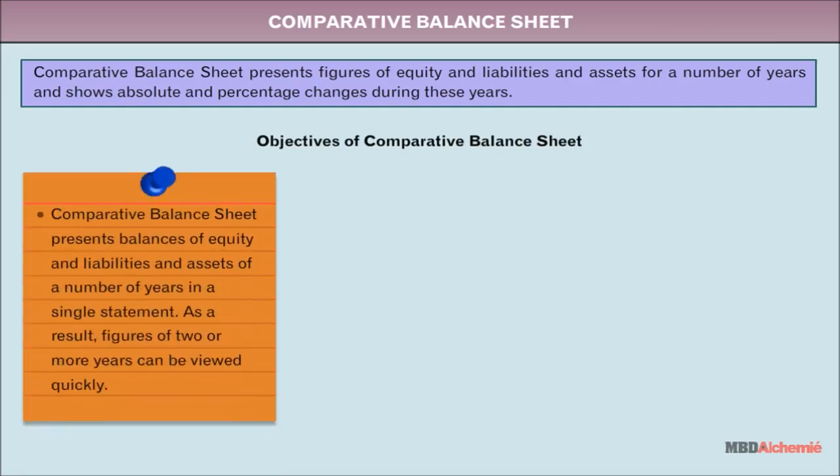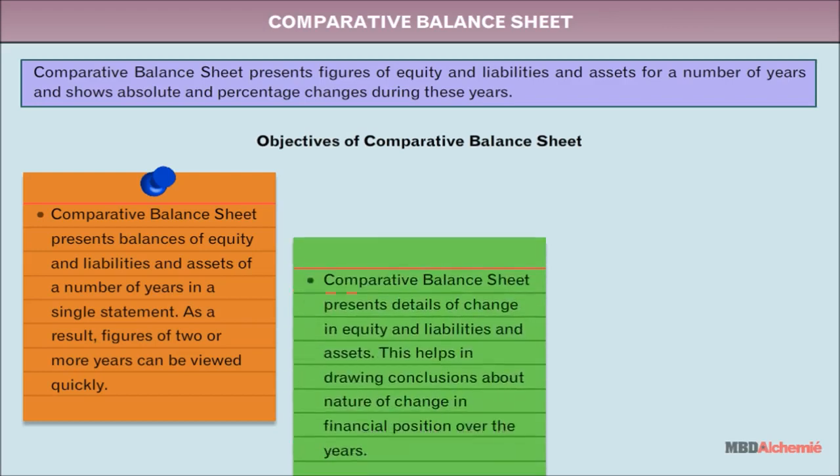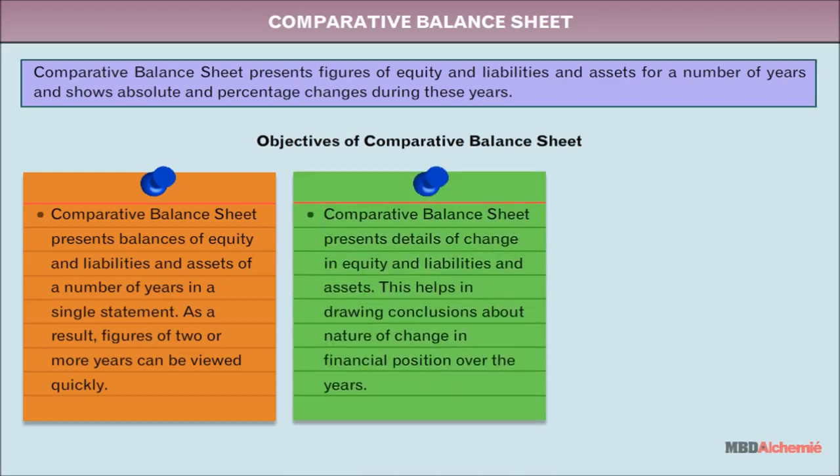The comparative balance sheet presents balances of equity and liabilities and assets of a number of years in a single statement. As a result, figures of two or more years can be viewed quickly. It also presents details of change in equity and liabilities and assets, helping in drawing conclusions about the nature of change in financial position over the years.